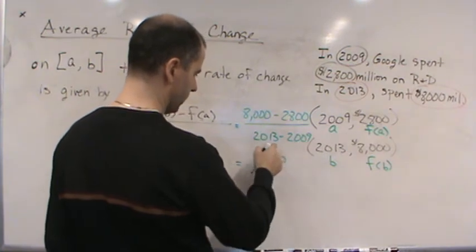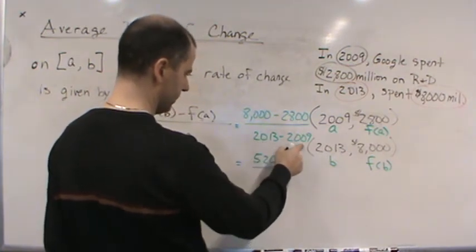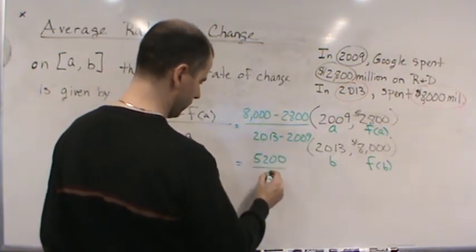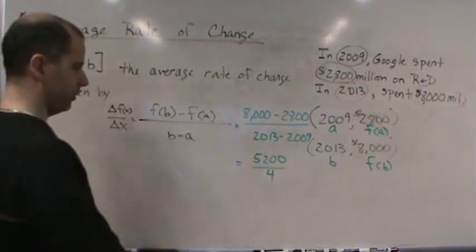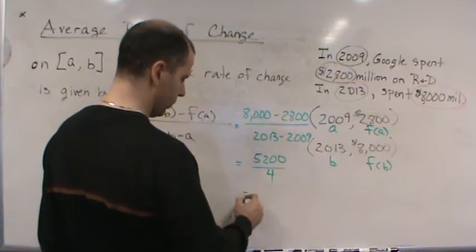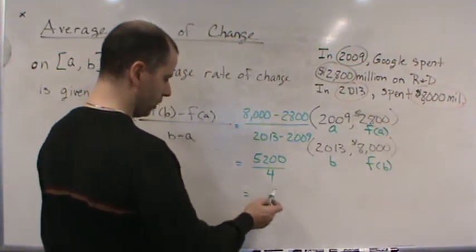2013 minus 2009 is 4 years. So now I simplify: 5200 divided by 4 equals 1300. This is in millions.